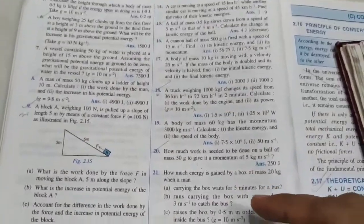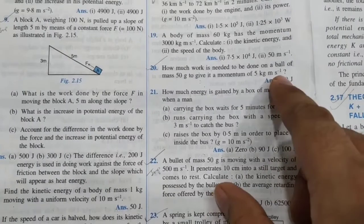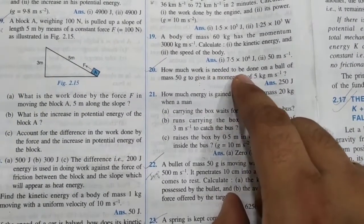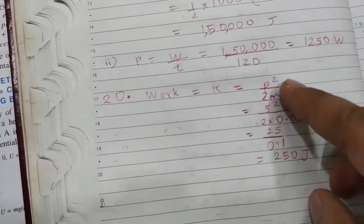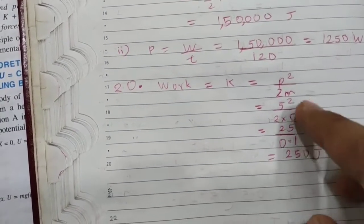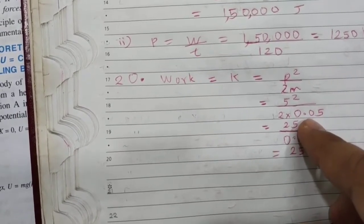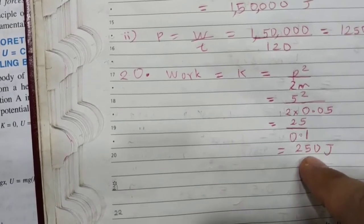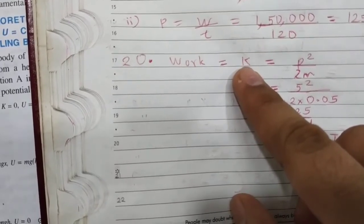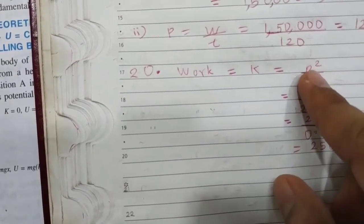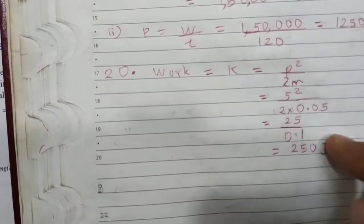In the twentieth sum, find the work needed to give a ball of mass 50 gram a momentum of 5 kg·m/s. By the work-energy theorem, work equals the change in kinetic energy. Use the formula KE equals momentum squared upon 2m. Make sure to convert mass to kg before calculating — conversion is the number one silly mistake in numericals. Substituting, we get 250 joule. Alternatively, use half mv squared by first finding velocity from momentum equals mass times velocity.